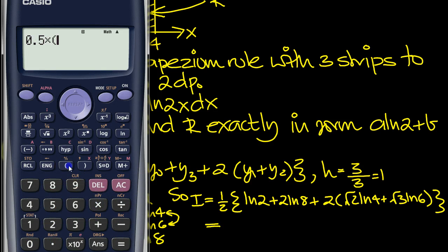So let's do that then. 0.5 times bracket, ln 2, plus 2 log, natural log of 8, plus 2 times bracket, root 2, ln 2, ln 4, plus root 3,